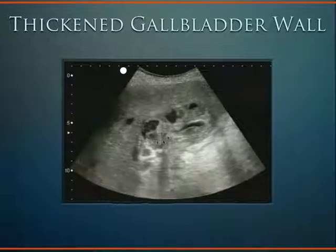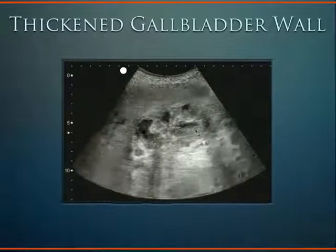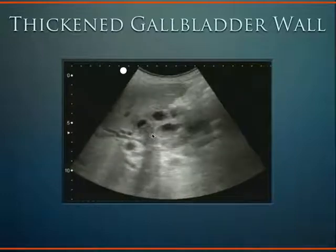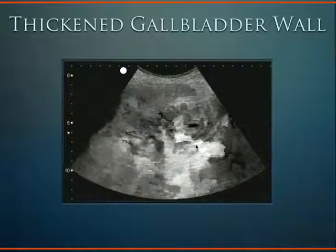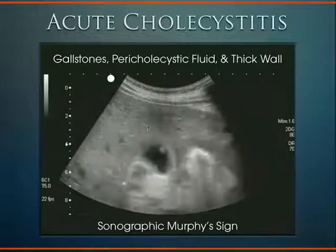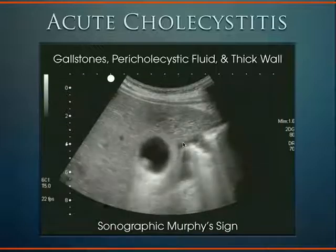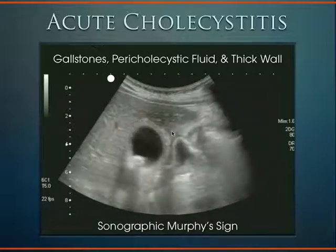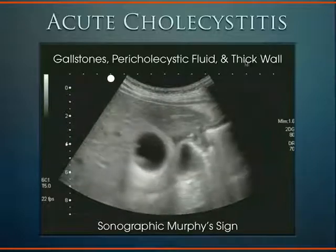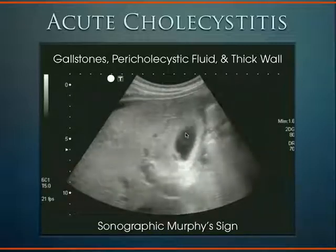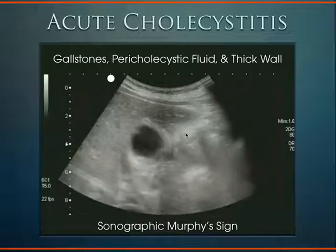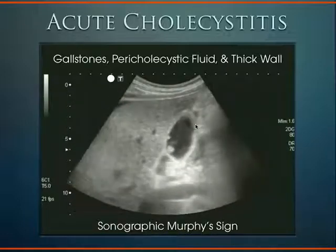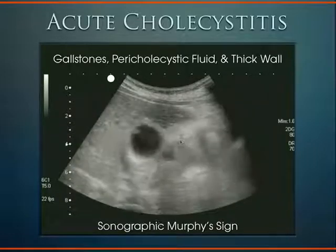We can see a stone here as we fan through. This is probably the coolest gallbladder in my collection — we see the very thickened gallbladder wall as we fan through in short axis. Here's another: a very thickened gallbladder wall, an echogenic stone with shadowing, and also some pericholecystic fluid — pretty rare to see but exciting. A wedge of fluid is seen adjacent to the gallbladder. Together — gallstones, pericholecystic fluid, thick wall — and as you lean the probe into the patient's gallbladder and they say 'right there, that's the exact pain,' that is a positive sonographic Murphy sign, very specific for cholecystitis.